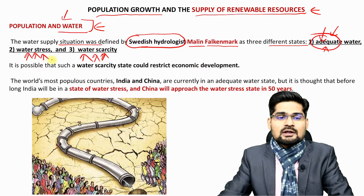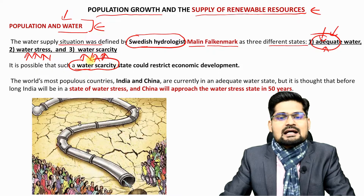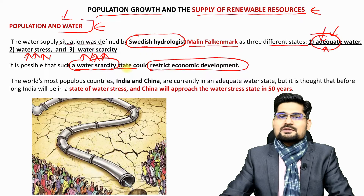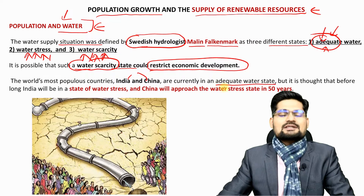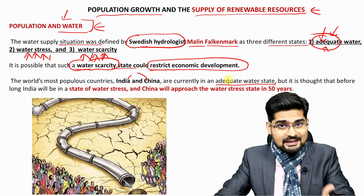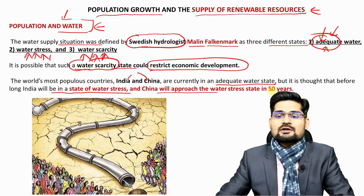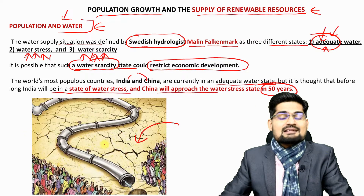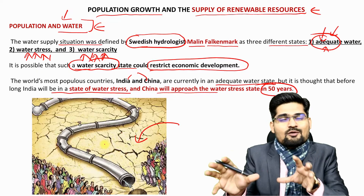In future, we are going into stress and water scarcity. Such a water scarcity state could restrict economic development. The most populous countries in the world — India and China — are currently in an adequate water state, but it's not going to remain so. India will be in a state of water stress and China will approach water stress as well in the next 50 years. That is the grim reality with population and water resources.